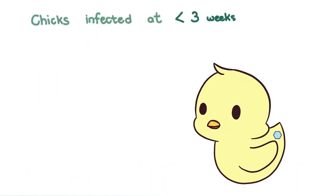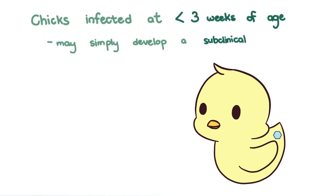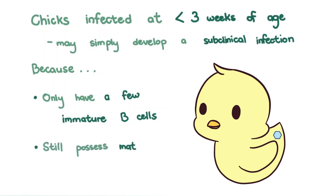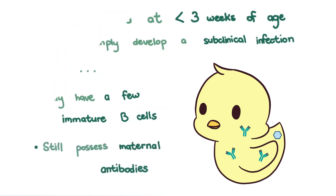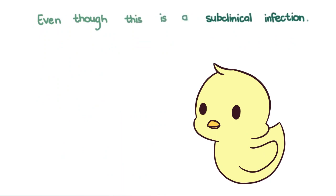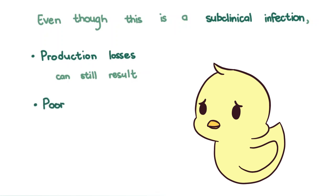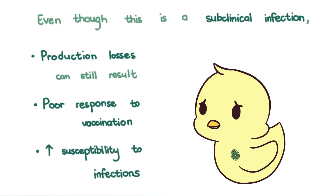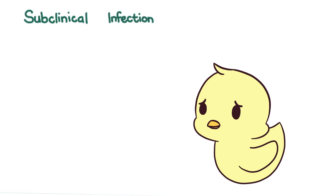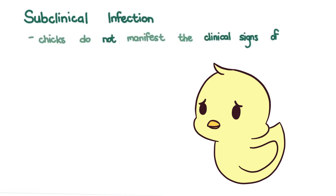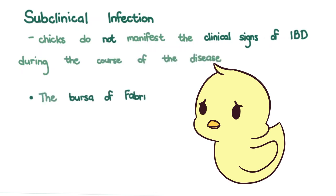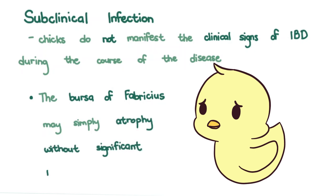Chicks infected before three weeks of age may simply develop a subclinical infection, because they only have a few immature B cells and still possess maternal antibodies to protect them. Even though this is a subclinical infection, production losses can still result. The chicks may become poor responders to vaccination and have increased susceptibility to infections that are normally harmless. The Bursa of Fabricius may simply atrophy without significant inflammation.